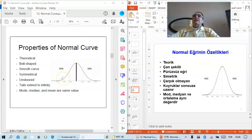Here we see the properties of a normal curve. It is a theoretical concept, bell-shaped, a smooth curve, symmetrical, unskewed. The tails extend to infinity. Mode, median, and mean are the same value.